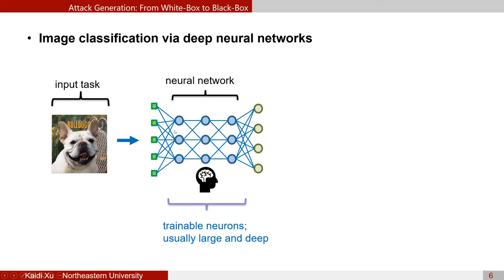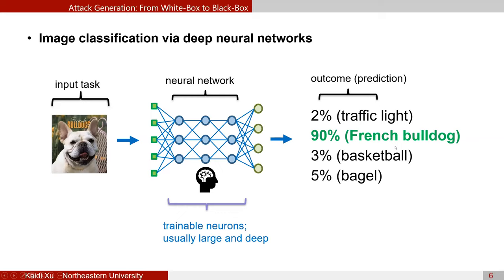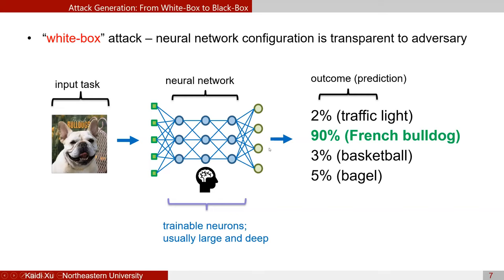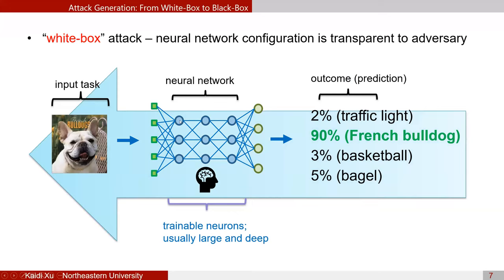To generate adversarial examples, consider an image classifier that outputs 'French bulldog.' We start from the white-box attack setting, where the neural network configuration is fully transparent. By doing backpropagation and calculating the gradient with respect to a target label — for example, to attack 'French bulldog' toward 'basketball' — we identify the most sensitive pixels in the input and change them according to the gradient.